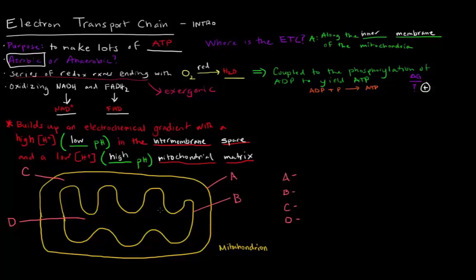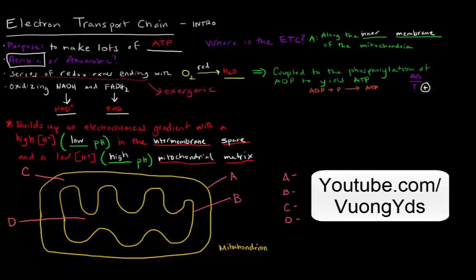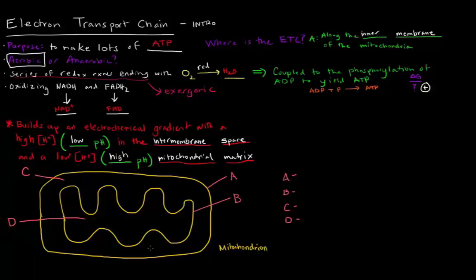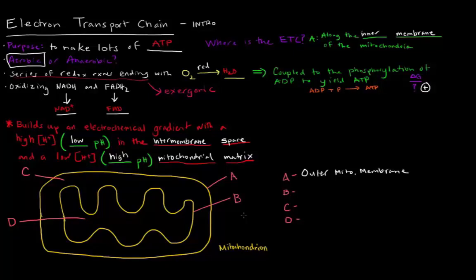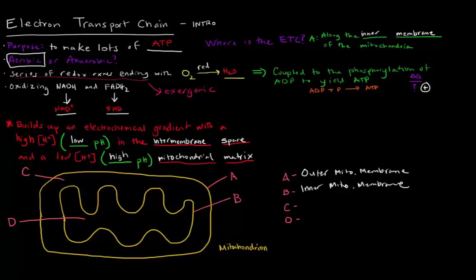That brings me to this diagram here. In case you don't already know the anatomy of a mitochondria — which is an organelle known as the energy powerhouse of a cell — the thing labeled A here is the outer membrane of the mitochondria. The mitochondrion has two membranes: this outer membrane and this inner membrane that's actually folded. This inner mitochondrial membrane is actually where the electron transport chain is. All of its protein complexes will be along this inner membrane.